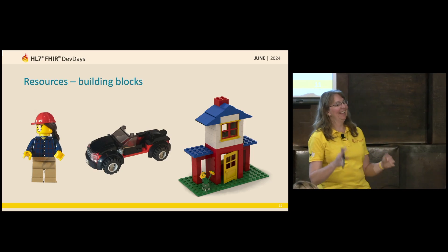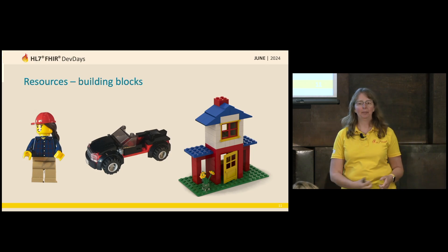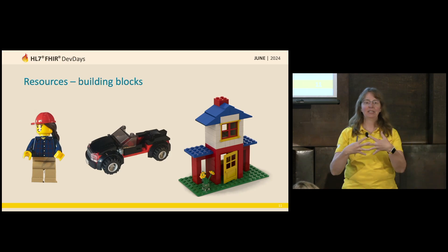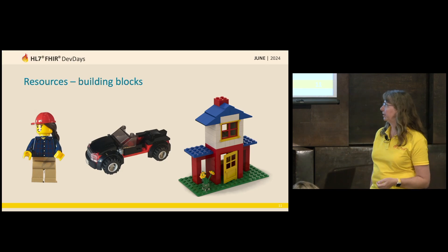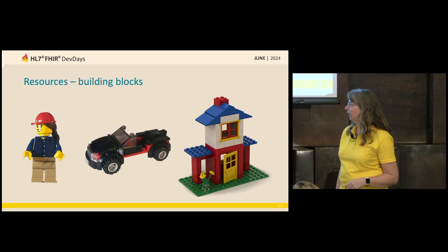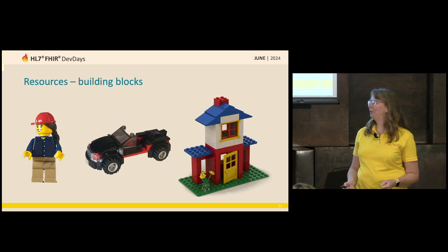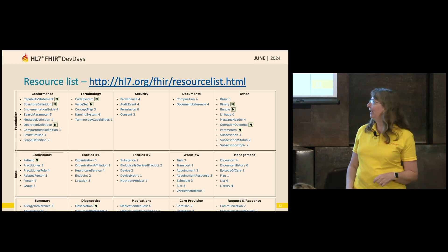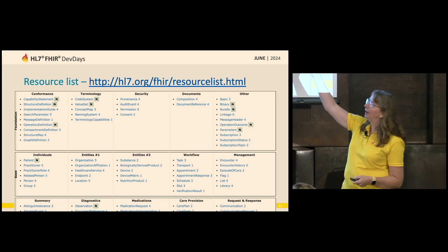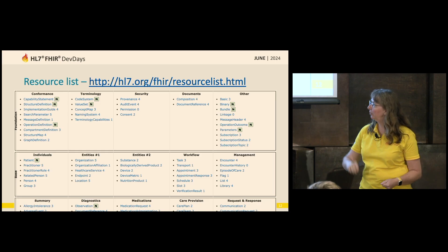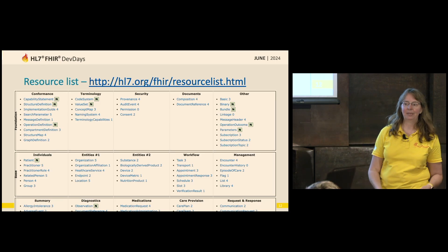Let's go back to FHIR. We have those FHIR building blocks — the resources. You can compare them with Lego blocks: separate standalone objects with data in them that we can connect to form a whole network of resources. There are quite a number of FHIR resource types — around 200. We have foundational resource types on top for tooling, and then base healthcare information resource types containing information about the patient, diagnostics, medication information, etc.